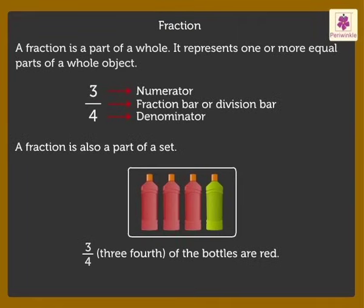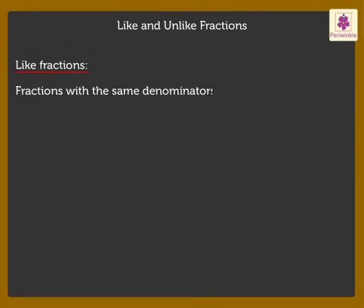When two or more fractions are given, depending on the value of their denominators, they can be termed as like or unlike fractions. Like fractions. Fractions with the same denominators are called like fractions. For example, 1 upon 4, 3 upon 4, etc.